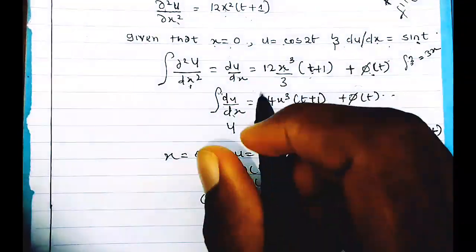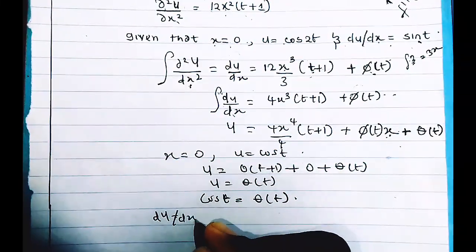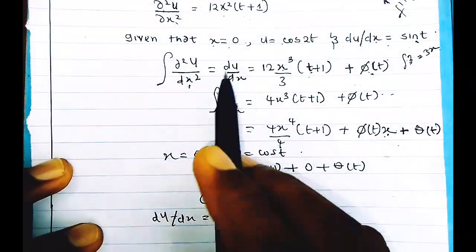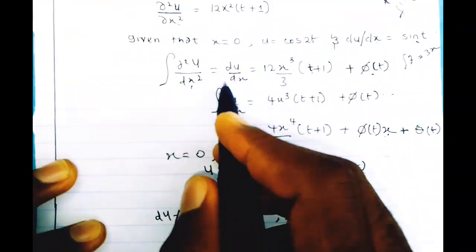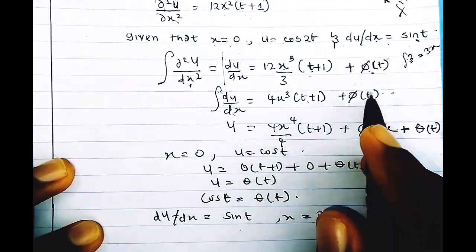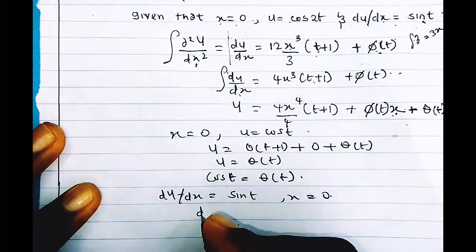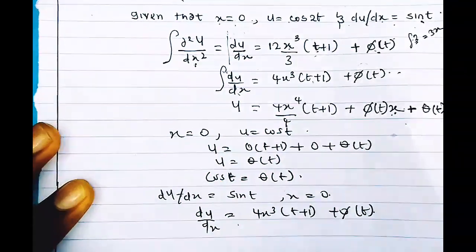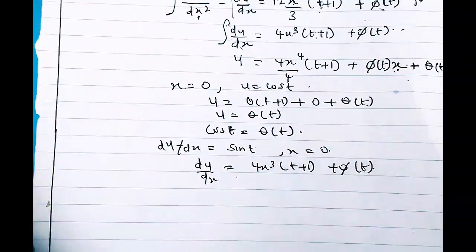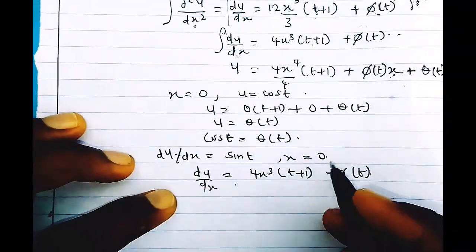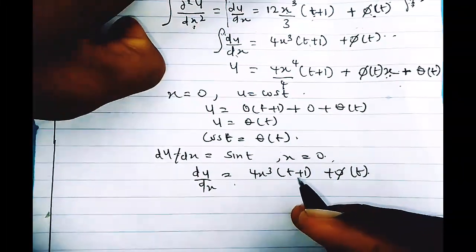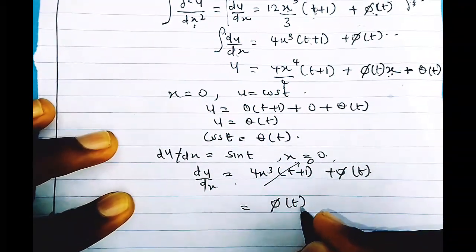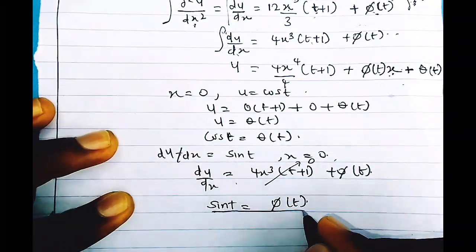Now applying the second condition: when x = 0, du/dx = sin(t). Going back to the first integration result, du/dx = 4x³(t+1) + φ(t). Substituting x = 0, all terms with x vanish, leaving du/dx = φ(t). Since du/dx = sin(t), we get φ(t) = sin(t). We have now found the value of the first constant.